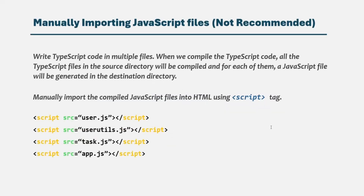The first way is not recommended, and that is by manually importing JavaScript files. We can write our TypeScript code in multiple files, and when we compile the TypeScript code, all the TypeScript files in the source directory will be compiled, and for each of them a JavaScript file will be generated in the destination directory. Then we can manually import the compiled JavaScript files into HTML — that means in the HTML we will have multiple script tags pointing to different generated JavaScript files. But you will have to manage all these imports manually in your HTML file, which can be cumbersome and error prone. You also need to make sure that you import them in the correct order, and that's why it is not really a great option. We are also not going to use this approach.